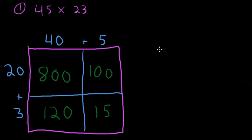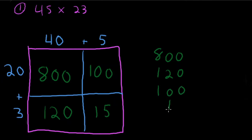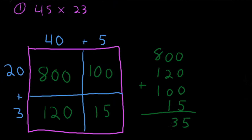Now let's add it up. We've got 800, 120, 100, and 15. Write from greatest to least and line them up carefully. Ones column: 5. Tens column: 3. Hundreds column: 10. Our area model answer is 1035. Let's double check with standard algorithm.